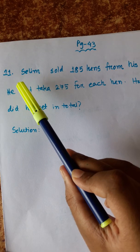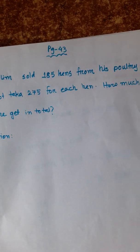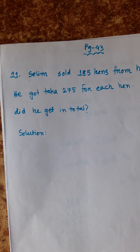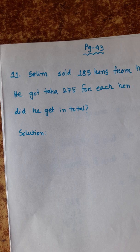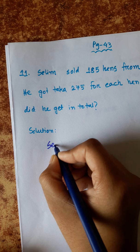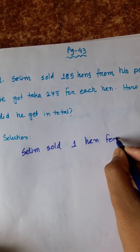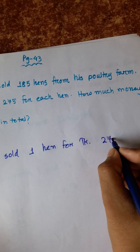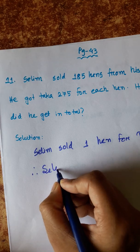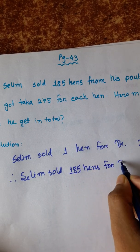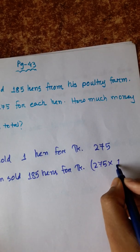Next, problem number 11: Salim sold 185 hens from his poultry farm. He got taka 275 for each hen. How much money did he get in total? We can write: Salim sold one hen for taka 275. So Salim sold 185 hens for taka 275 into 185.